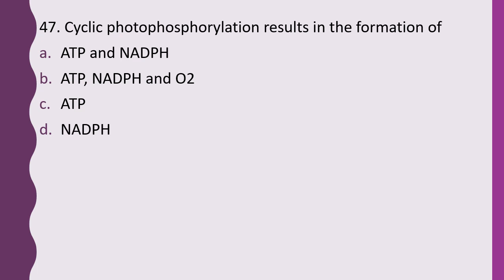Question 47. Cyclic photophosphorylation results in formation of: ATP and NADPH, ATP only, NADPH and oxygen, or ATP and NADPH. The correct answer is option C — it results in formation of ATP only.